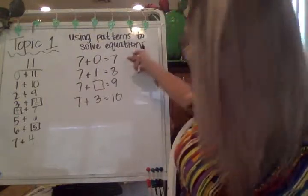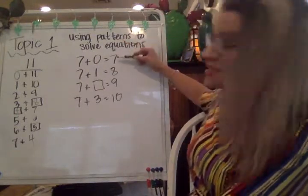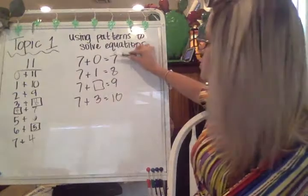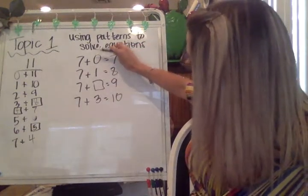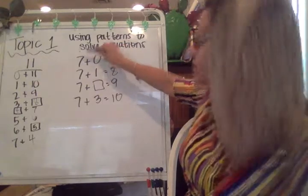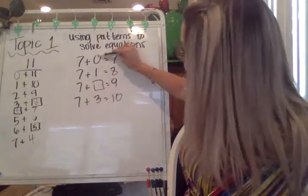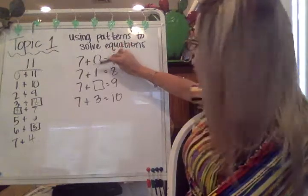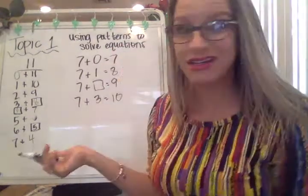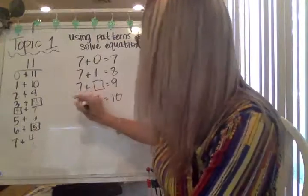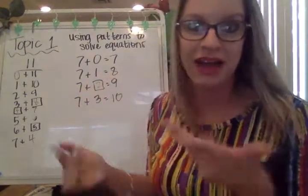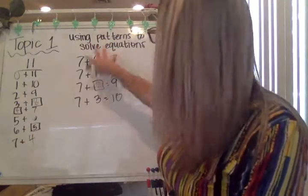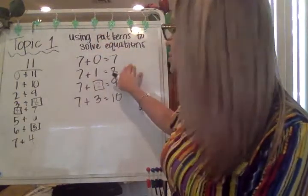And you can look for the pattern in this. On this, you can see that these sums are increasing by one. So seven, eight, nine, ten. These, I guess the first addend is staying the same. It's always seven. I can look at the second addend. Zero, one, something, three. Well, the missing number there is two. Let's see if that makes sense. Seven plus two is nine. It does. So seven, eight, nine. There we go. So you can look for patterns to solve equations.